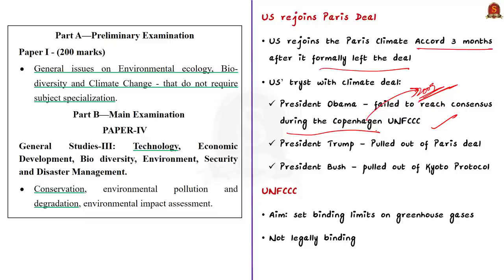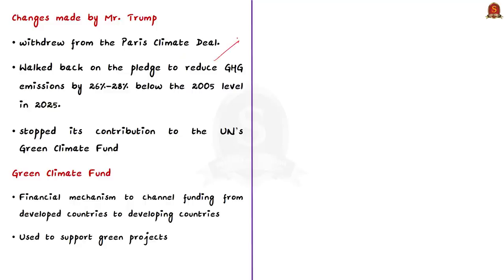The US taking a contrasting view on climate change deals is not new — in 2001, President George Bush pulled out of the Kyoto Protocol, which was about reducing greenhouse gas concentrations in the atmosphere. Similarly, Trump after becoming President diluted many environmental provisions, including pulling out of the Paris deal. Initially, the US pledged to reduce greenhouse gas emissions by 26-28% below 2005 levels by 2025. After leaving the Paris deal, this commitment would not be honored. America also stopped its contribution to the UN's Green Climate Fund, having initially pledged around $3 billion to GCF, but the Trump administration went back on this commitment.